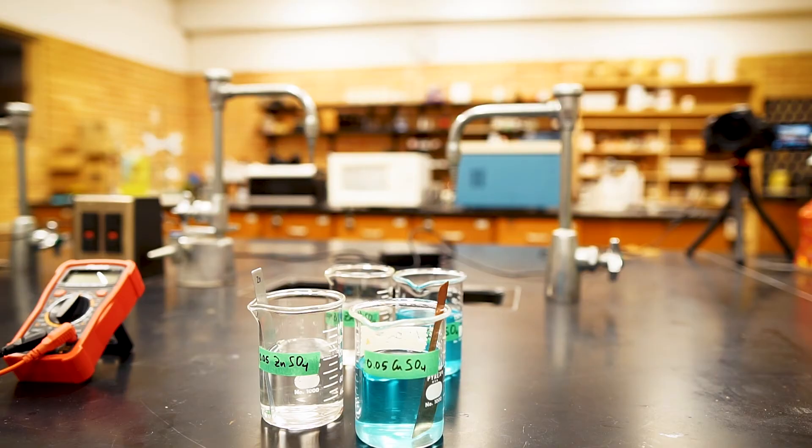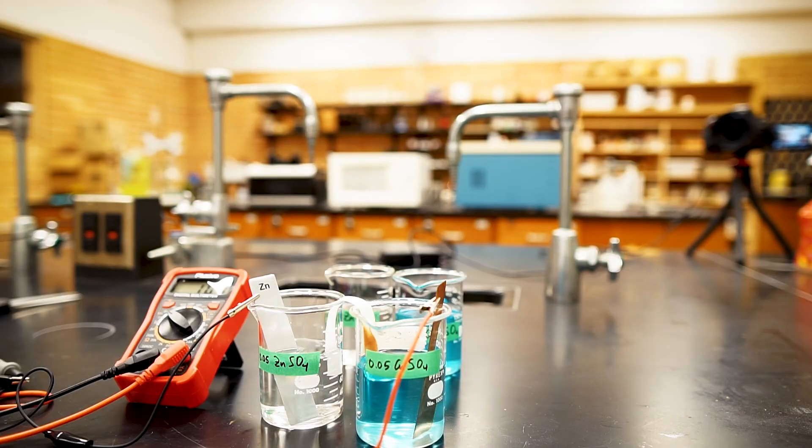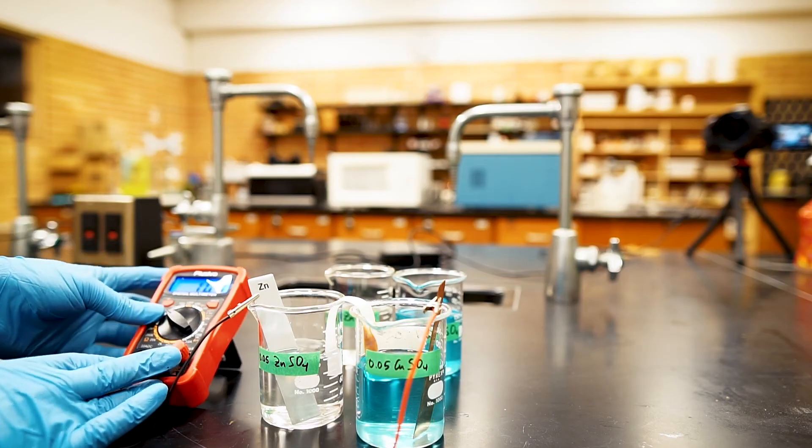Another experiment we can do is to figure out how the concentrations of the solutions in the half-cells affect the voltage. This can be calculated using the Nernst equation. As you can see here, it is really about the ratio between the two. So if we measure this when both solutions are at half the original concentration, the voltage will stay the same.